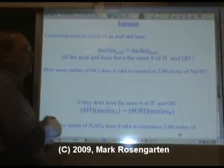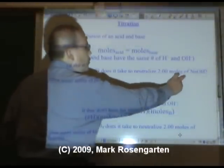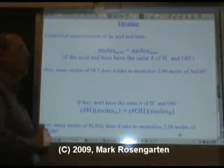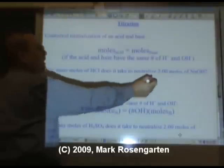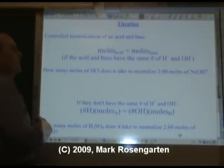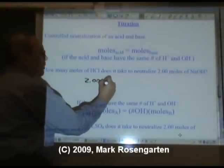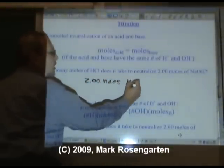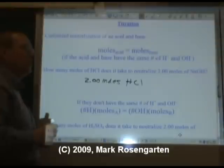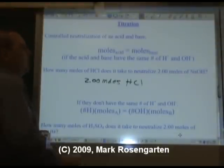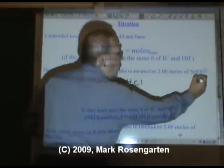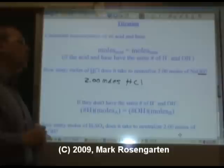So how many moles of hydrochloric acid does it take to neutralize 2.00 moles of NaOH? Well the moles of acid equal the number of moles of base. So 2.00 moles of HCl will neutralize 2.00 moles of NaOH. One H in the acid, one OH in the base will neutralize each other out in a one to one ratio.